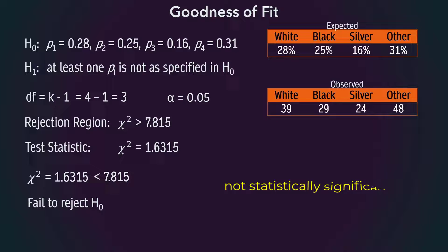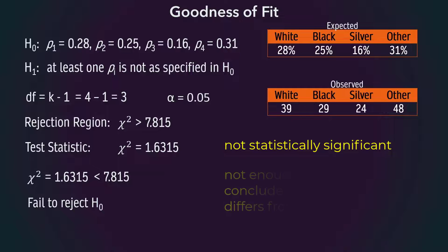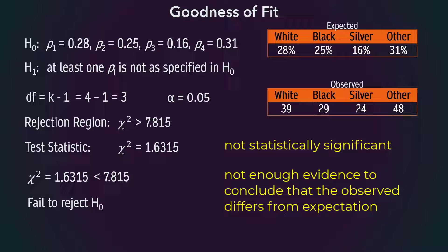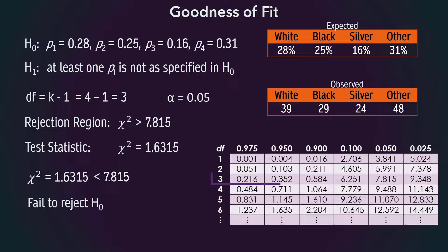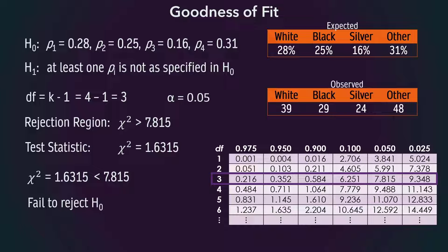The result is not statistically significant, or we don't have enough evidence to conclude that the distribution of the observed colors differs significantly from the expectation. We can also estimate the p-value by checking on the df equals 3 row where 1.63 will fall. We see that it will fall between 0.584 and 6.251 here. Therefore, the p-value is somewhere between alphas of 0.1 and 0.9.